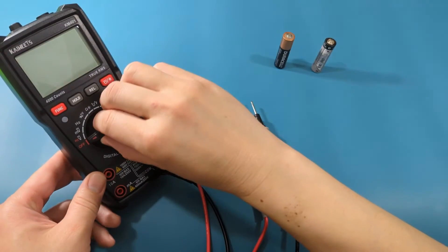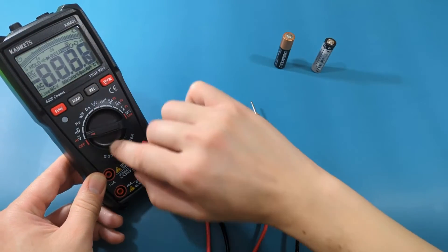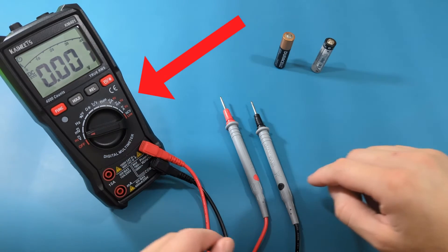On your multimeter, you want to set it to the DC voltage. Turn the dial to the V with a squiggly line on top.